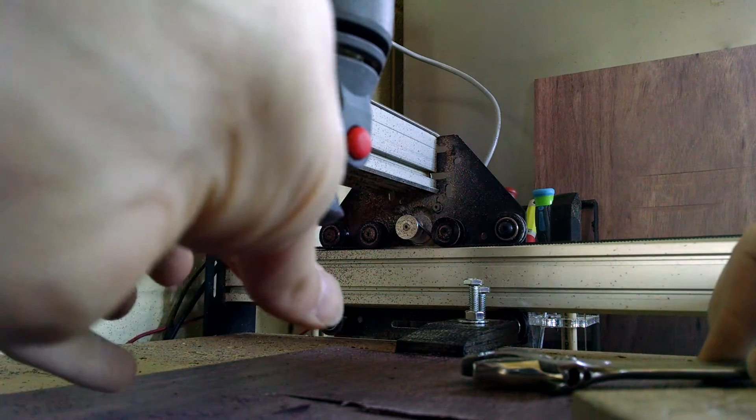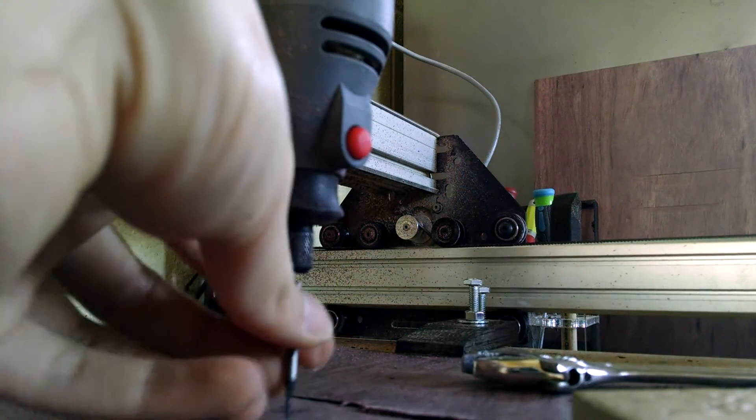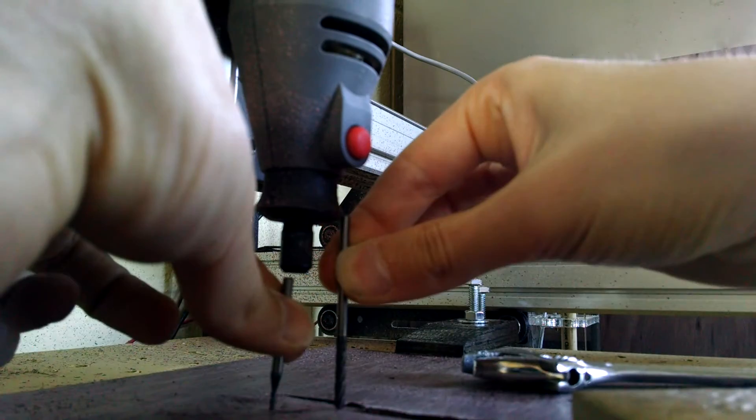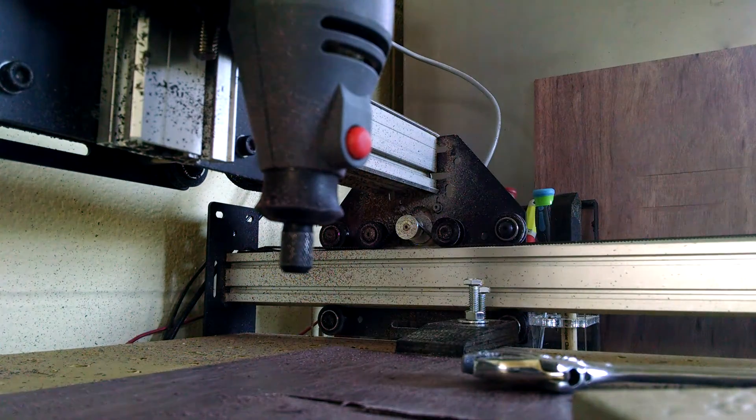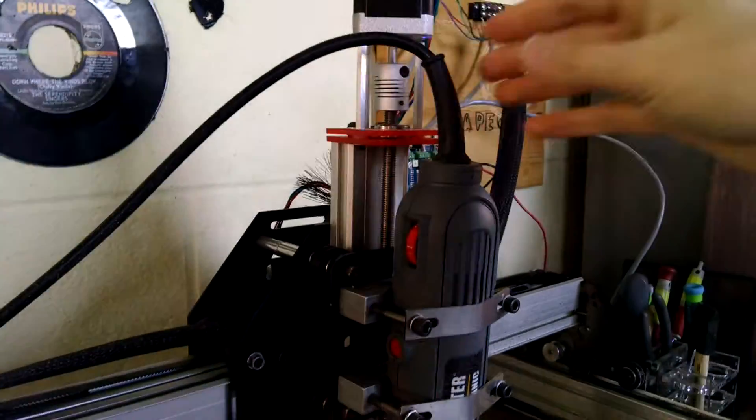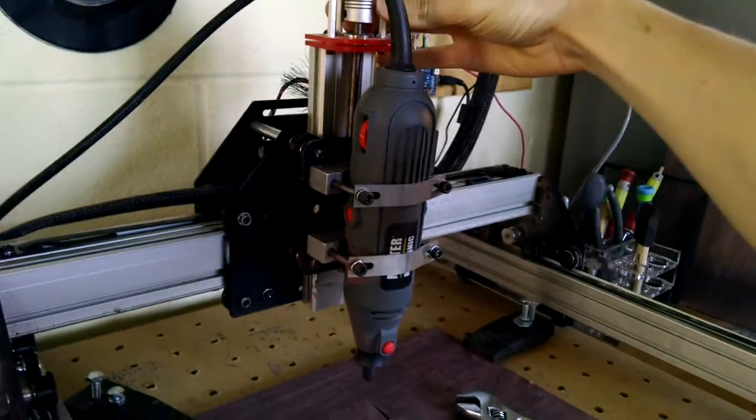And then you can pull that one out. This is a good thing to keep in mind. Some bits are shorter than others, so you might need to raise the machine up. And you can do that by hand or in the code or in the program, but if you're not connected to the computer...